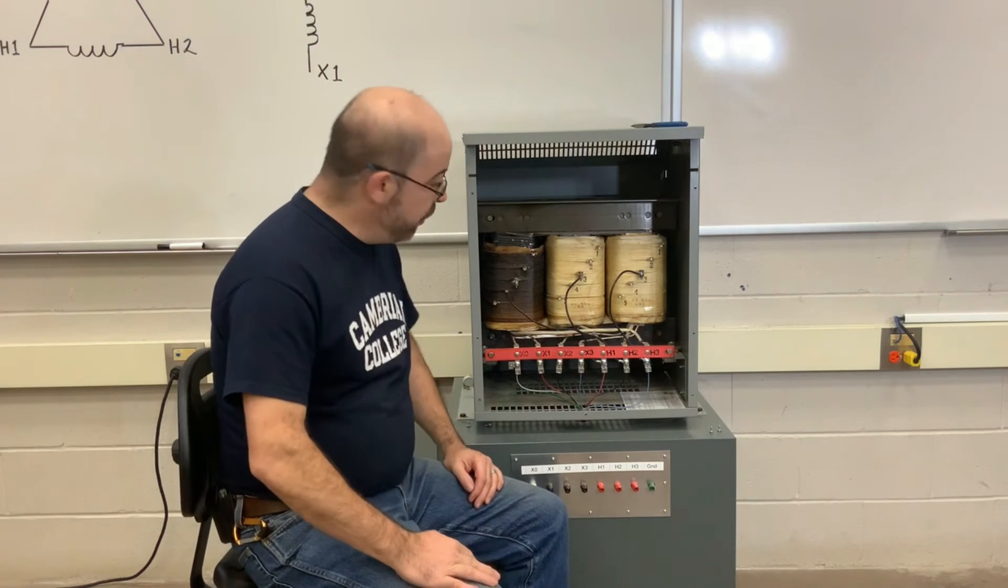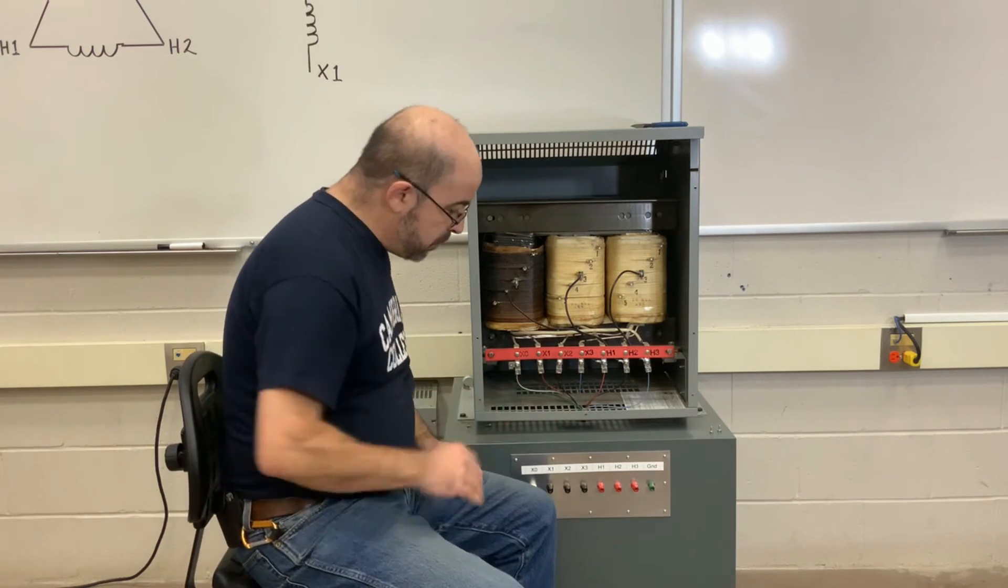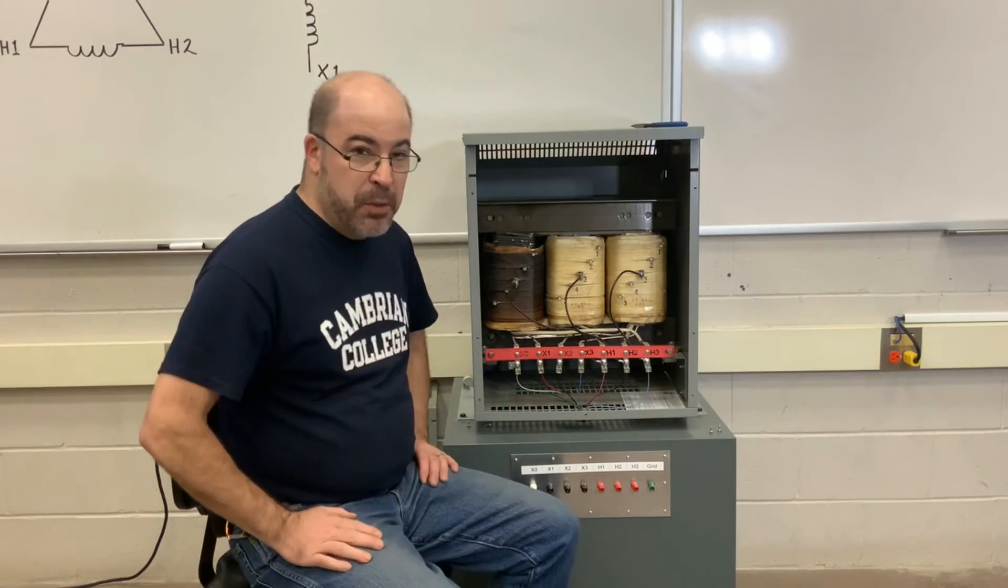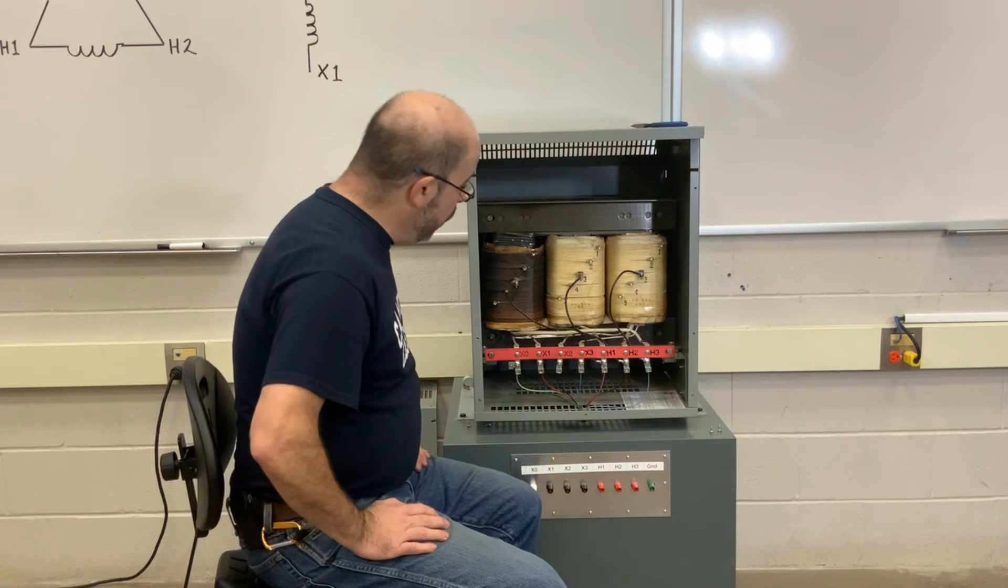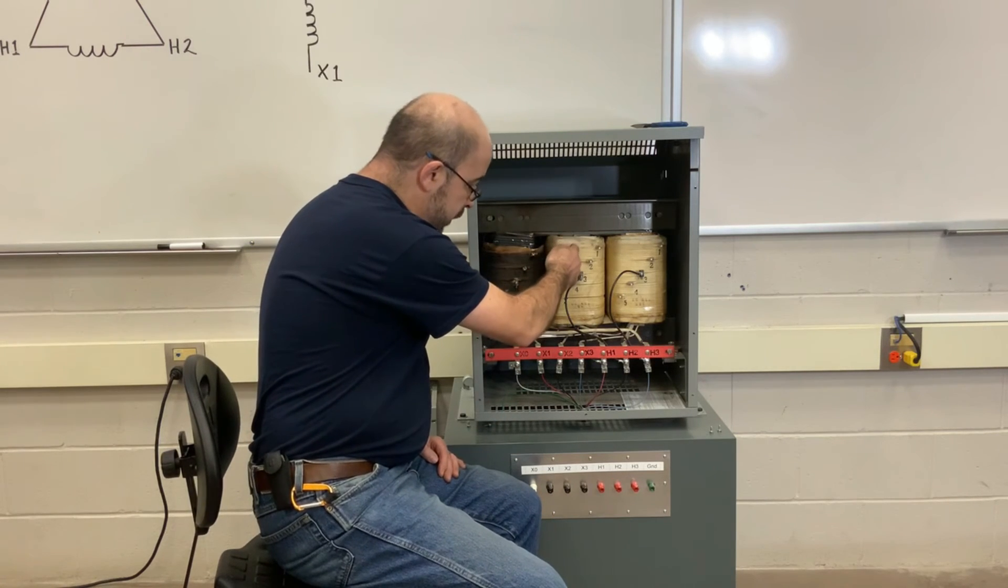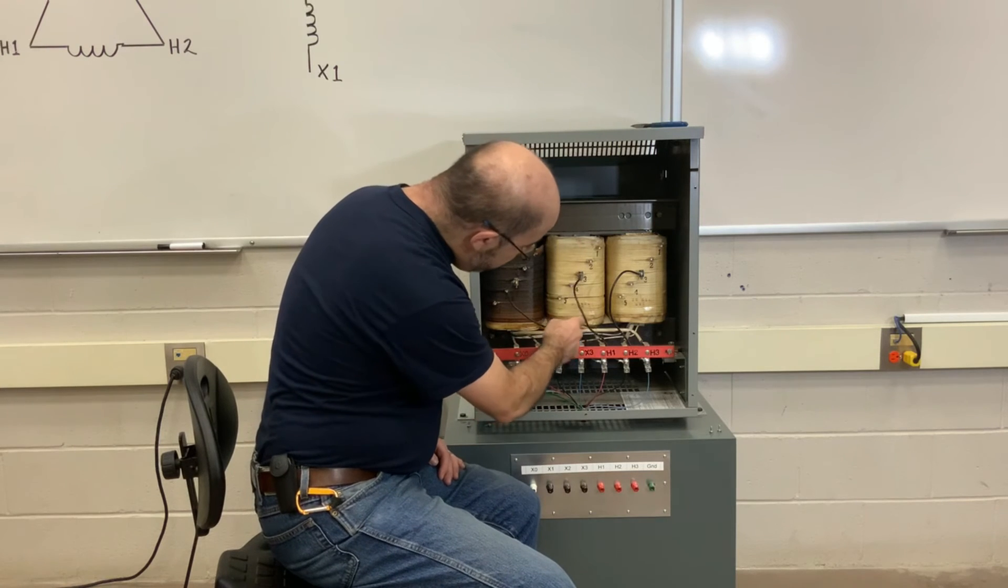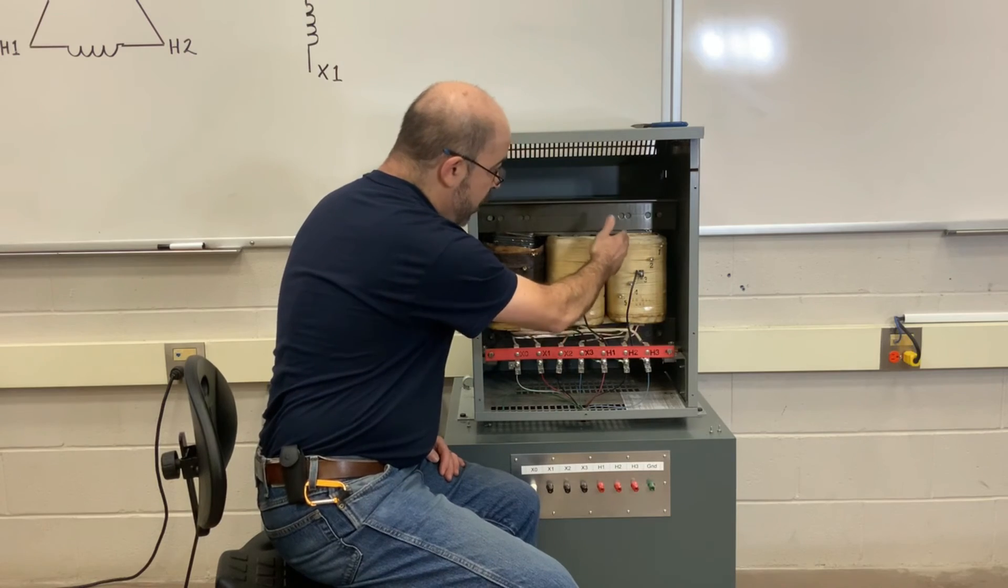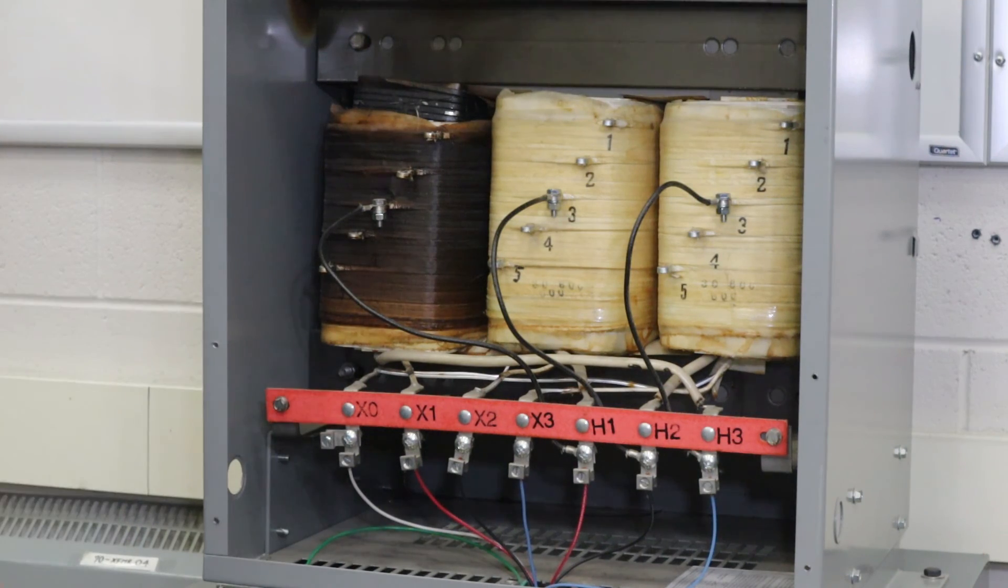So we've gone ahead and we've taken the cover off and despite all of our measurements we can see that there's visual evidence that this transformer has been damaged. One of the things that we see is that the H2 right here H3 windings both primary and secondary are intact. But this one over here the X1 is burnt.